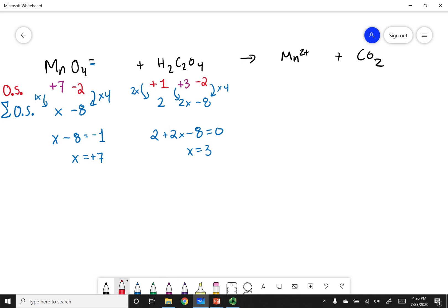So remember the rule for oxidation states. If something is charged, that's the oxidation state of that compound. Here I have manganese in the plus 2 oxidation state, so that means its oxidation state is plus 2. So let's do the last compound here.